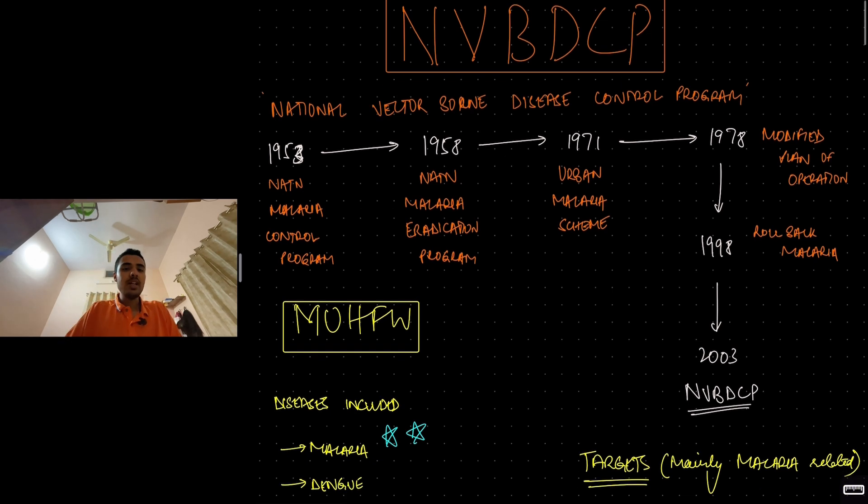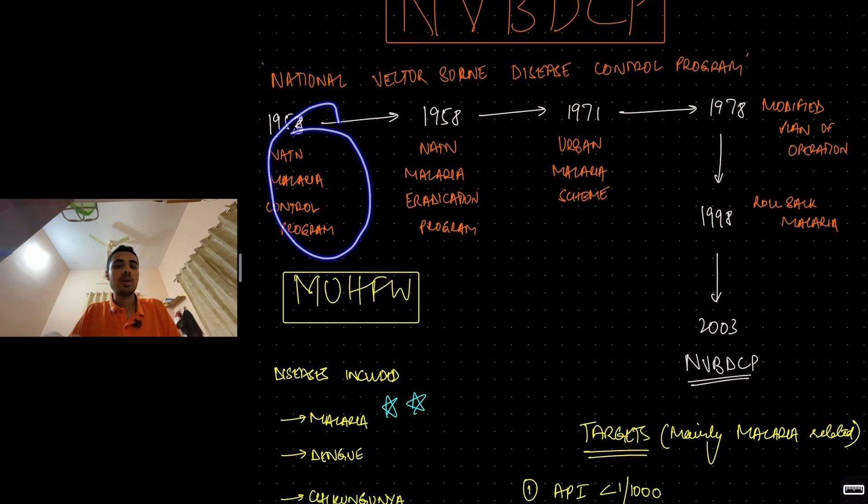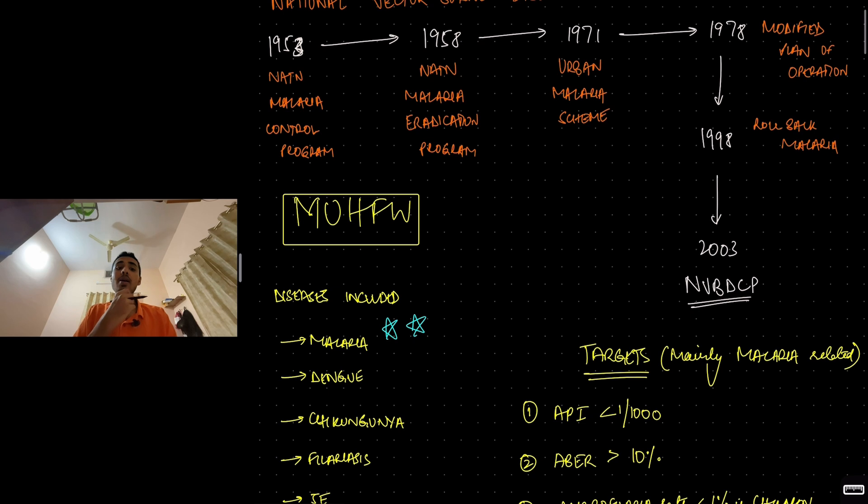In 1953, they started National Malaria Control Program. By 1958, cases reduced a lot. The program was a success. They thought they could eradicate malaria with the National Malaria Eradication Program. But again by 1971, malaria increased. So in 1971, urban malaria scheme came. In 1978, they slightly modified the plan of operations. In 1998, rollback malaria. And in 2003 came National Vector Borne Disease Control Program under the Ministry of Health and Family Welfare.